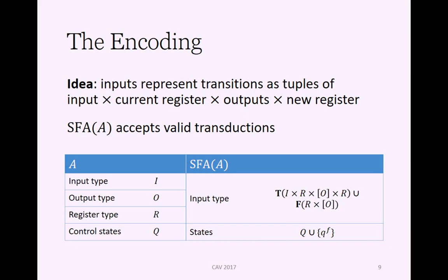The actual input type for the encoding will be the sum type of the tuples representing normal transitions, and then tuples representing the kind of finalizations, which just include the register and the associated list of outputs. The set of states will be otherwise the same, but we add this additional state for the targets of the finalizers, which is the only accepting state in the encoding.